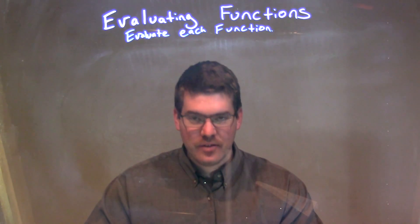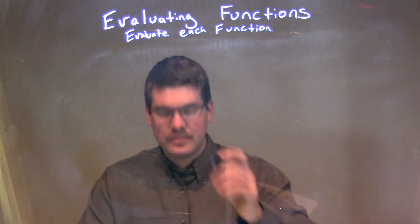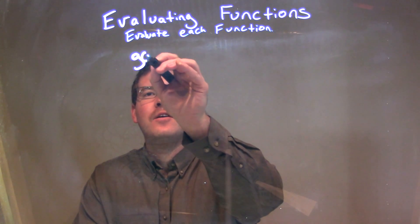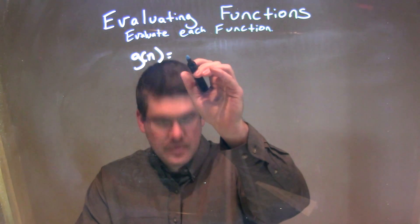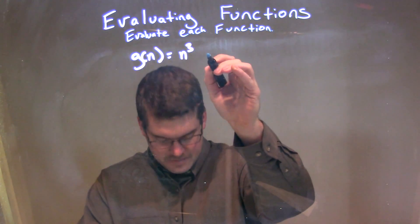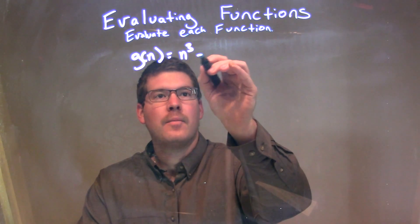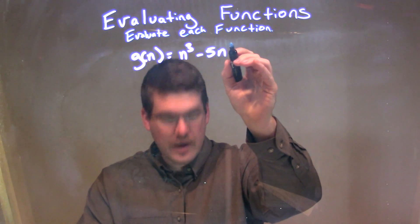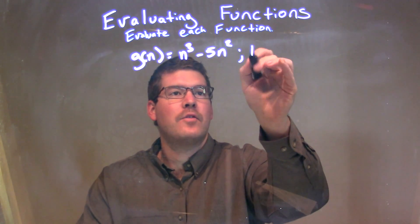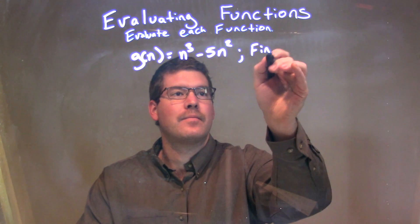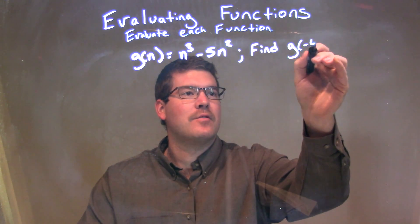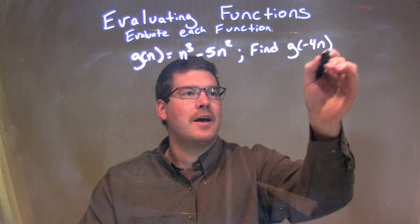So, if I was given this function — g of n is equal to n to the third minus 5n squared — we need to find g of negative 4n.